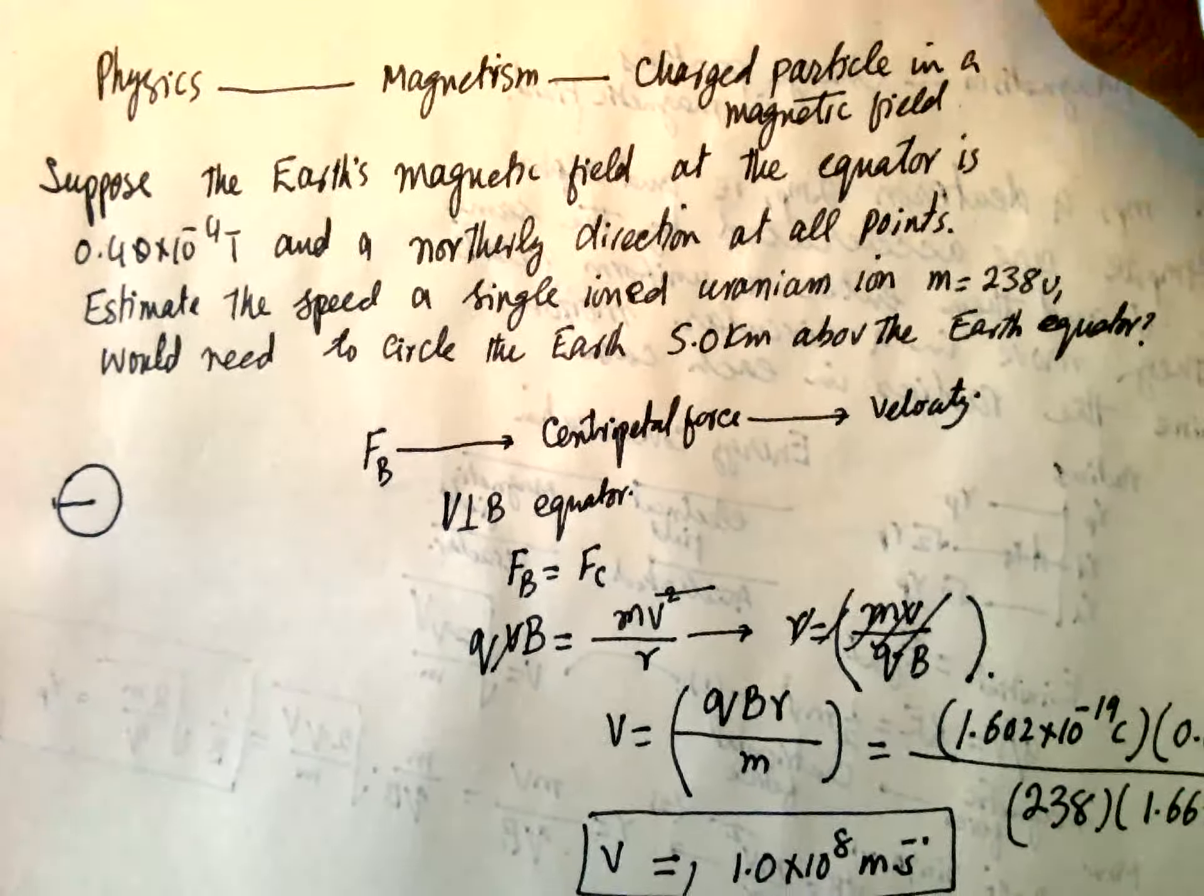Now substituting the value. Q is single ion, 1.602 into 10 power minus 19 Coulomb. Charged magnetic field 0.4 into 10 power minus 4 Tesla. Radius.